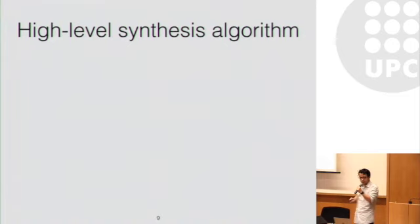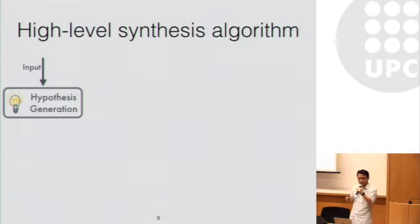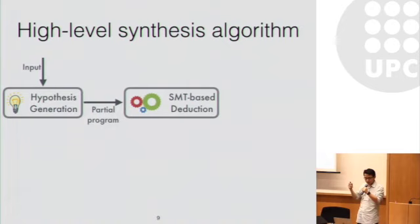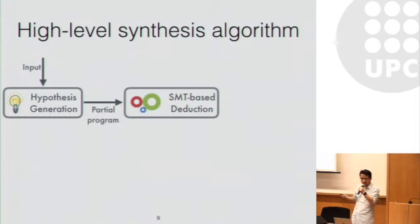Now I would like to walk through the high-level synthesis algorithm behind Morpheus. Morpheus performs enumerative search over a space of hypotheses, where each hypothesis represents the high-level structure of a component program with all the missing arguments. The system enumerates hypotheses and sends them to the SMT reasoning engine to check whether it is feasible to complete the current partial program.